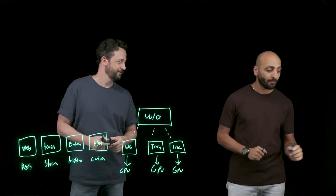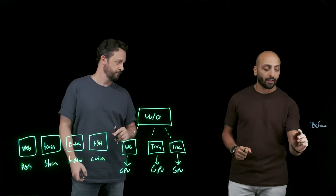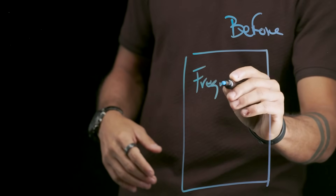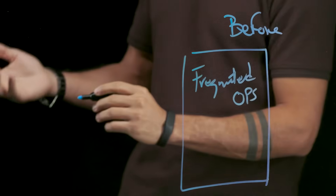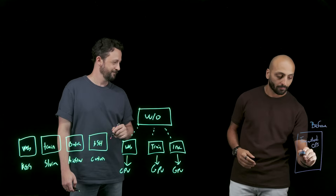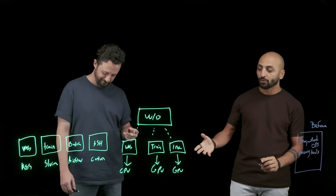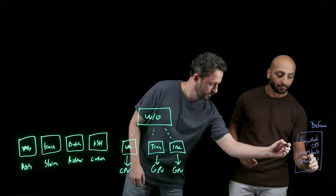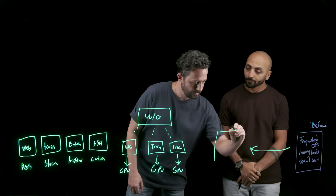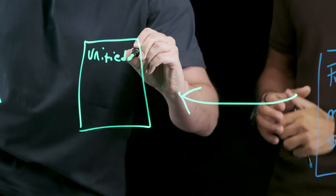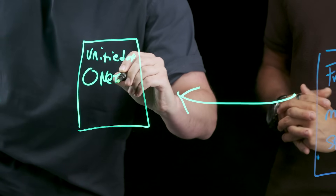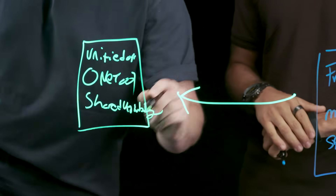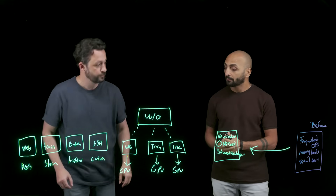So there's a before and after here. Before flexible orchestration, you have fragmented ops, many tools, and specialized knowledge silos. When you move to flexible orchestration, instead of all of that, you have unified ops, one tool, and shared knowledge — which makes everything so much easier and so much more scalable.